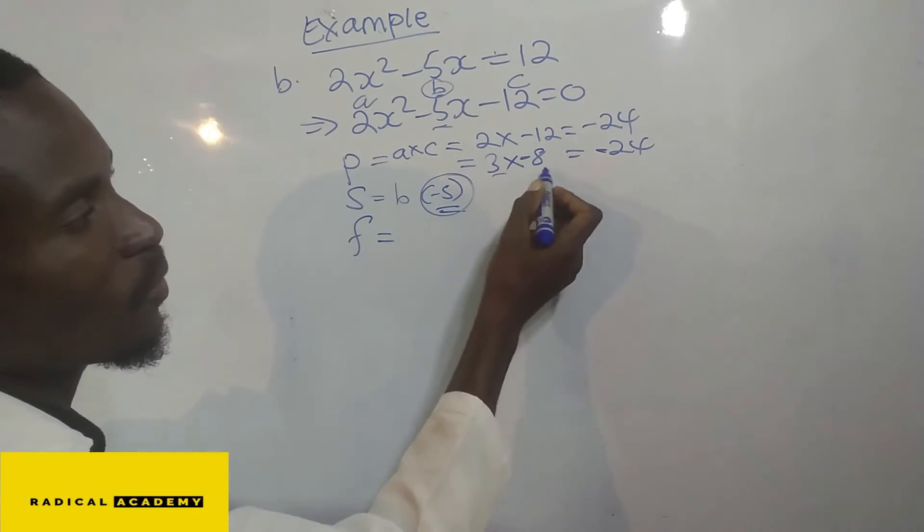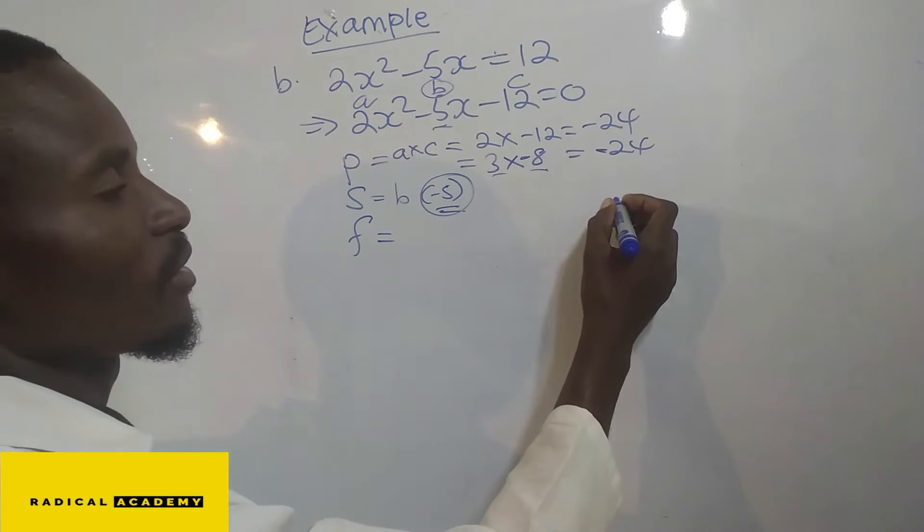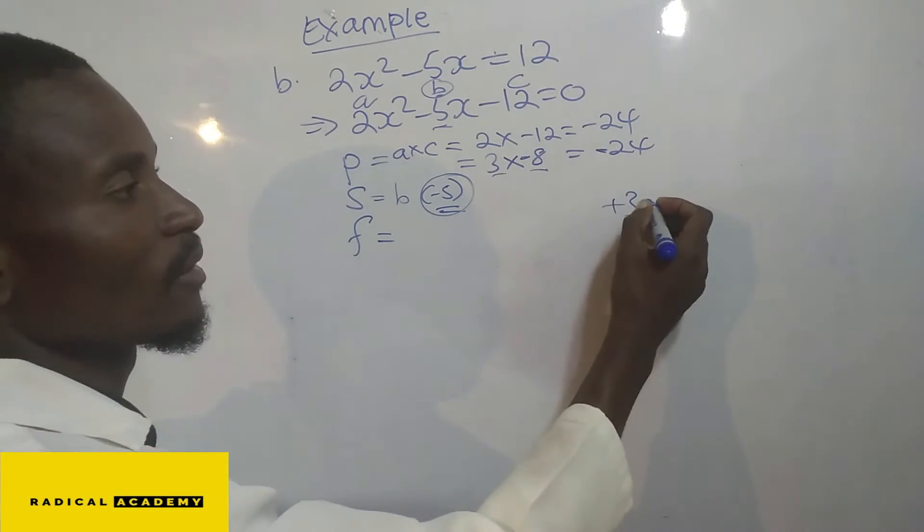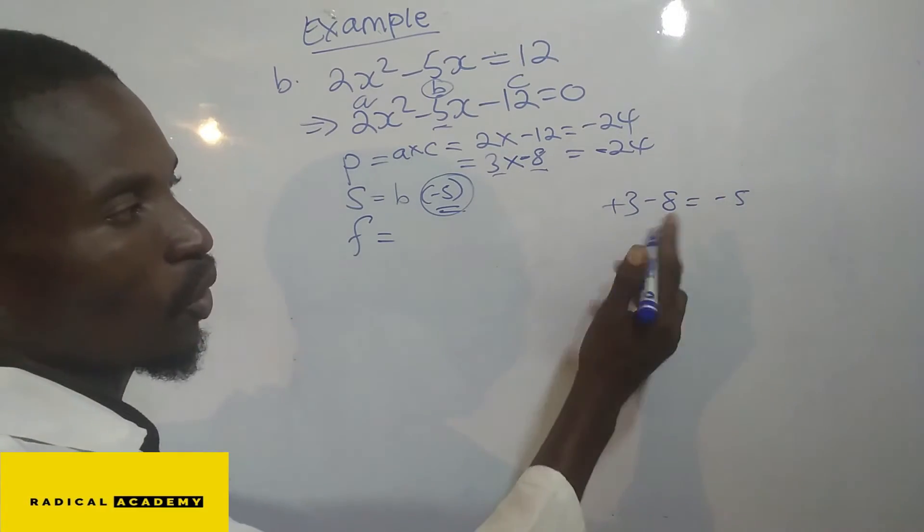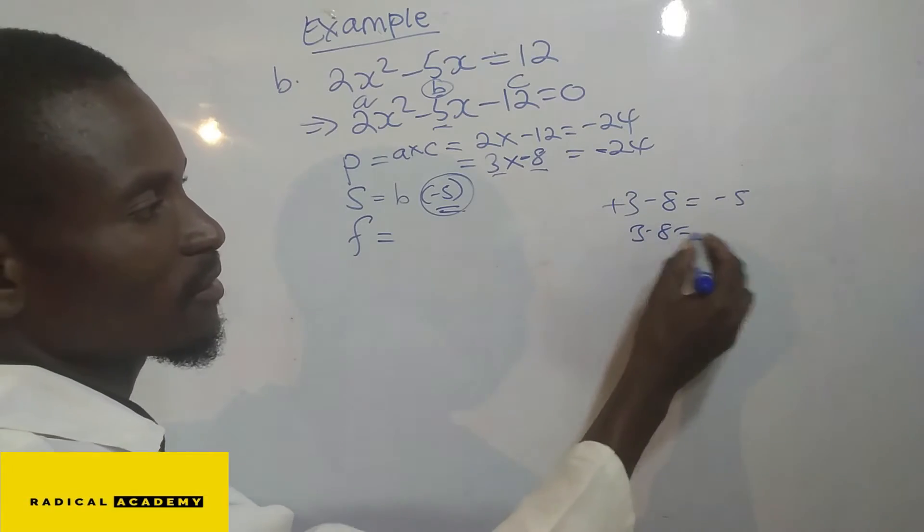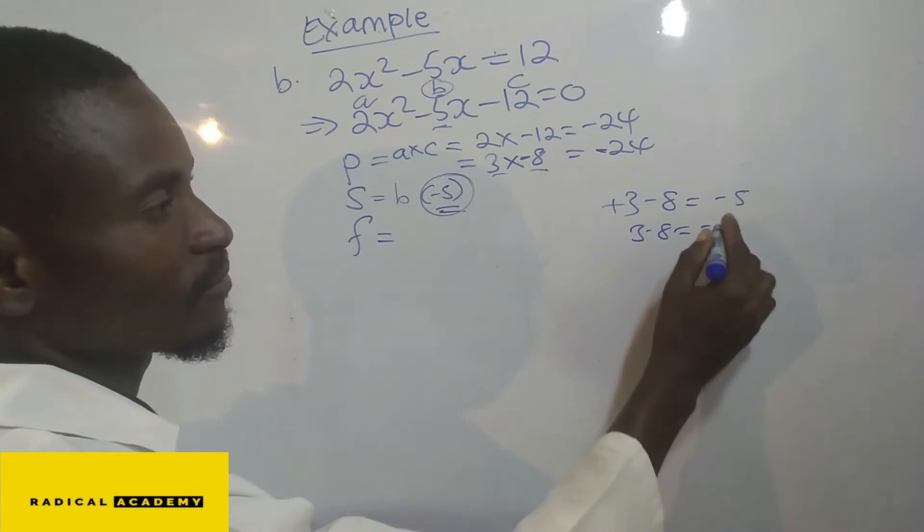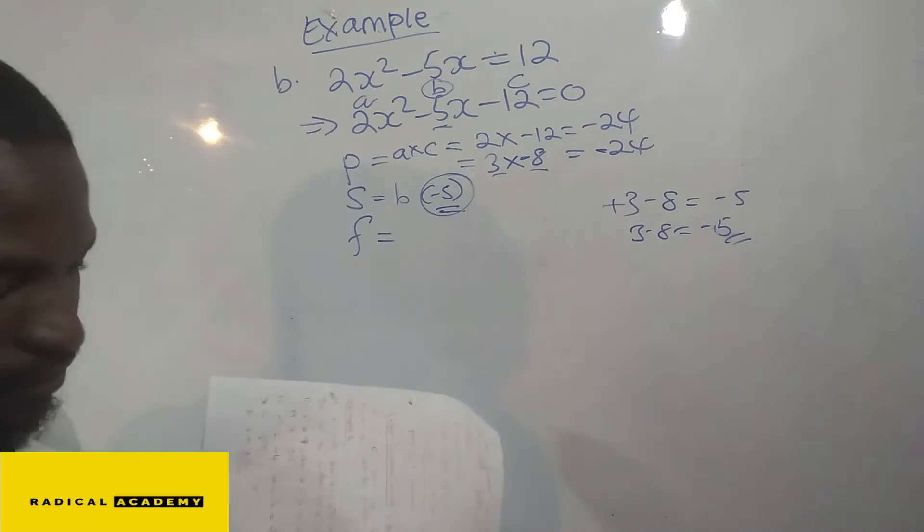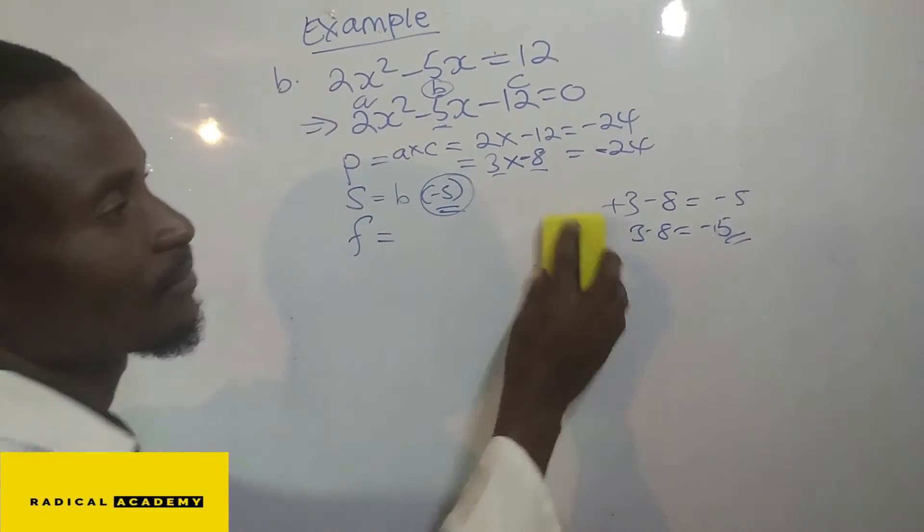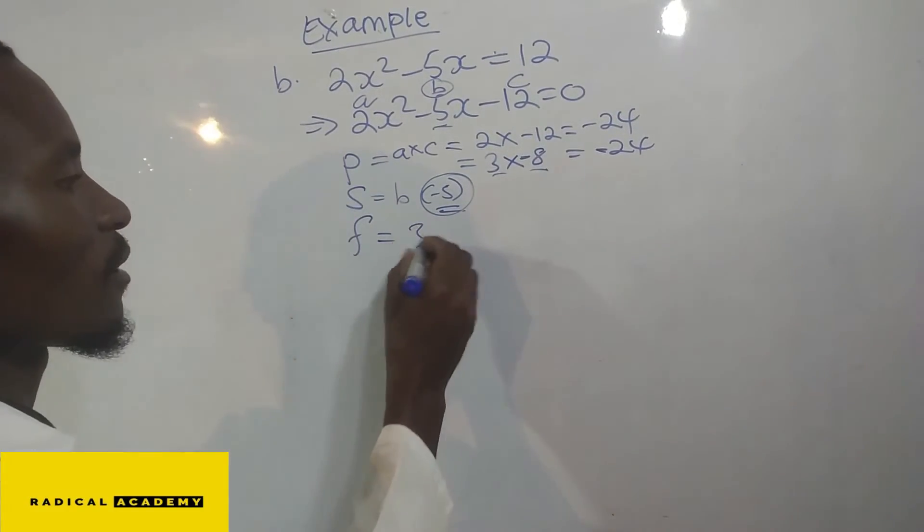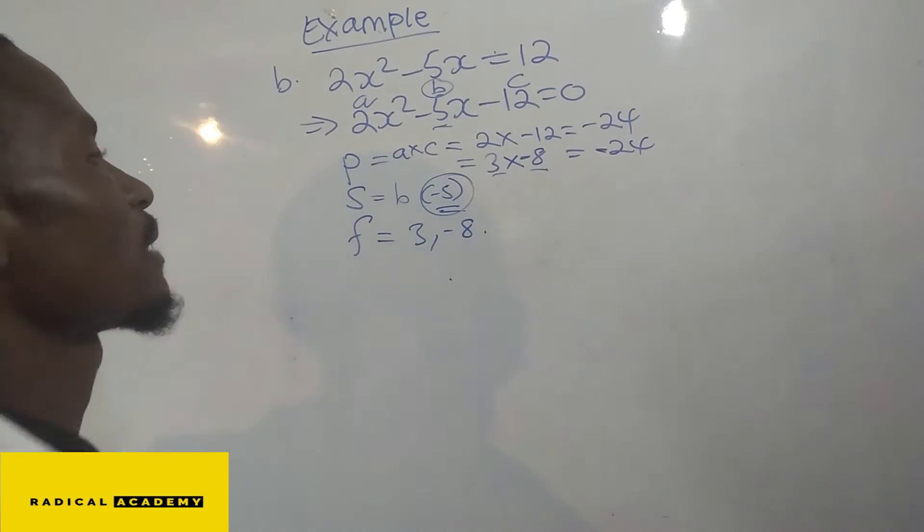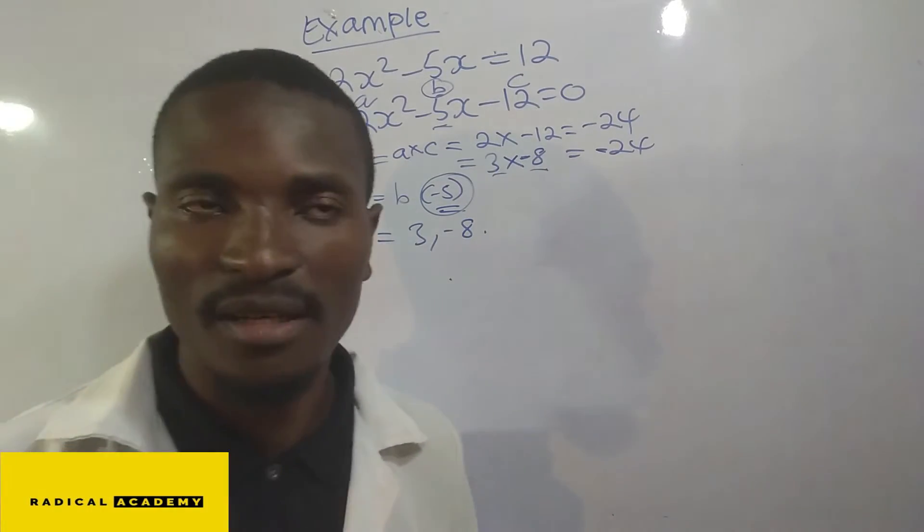So the numbers is this one and this one. Meaning that positive 3 minus 8 equals to negative 5, or just 3 minus 8 equals to negative 5. So make sure that you understand that concept. So meaning our factors will be 3 and negative 8. After you find the factors, those two numbers, 3 and 8.